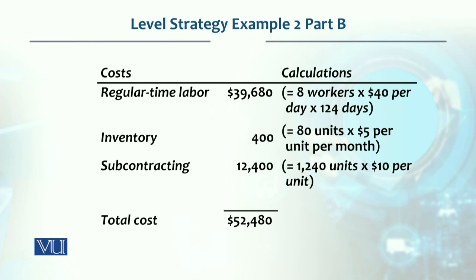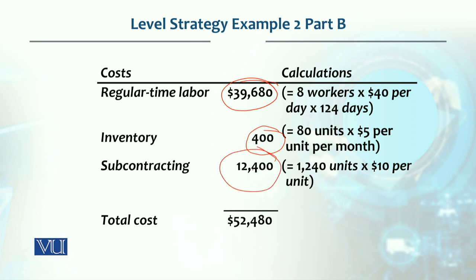Now if we look at the cost: regular production cost is $39,680, because 8 workers at $40 per day for 124 days. Inventory cost — there was a small inventory of 80 units multiplied by $5 — comes to $400. Subcontracting: 1,240 multiplied by $10 gives $12,400. So the total cost comes to $52,480.